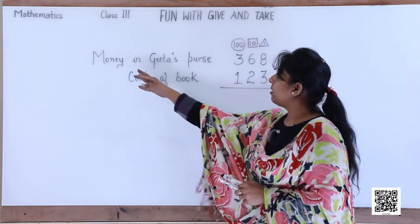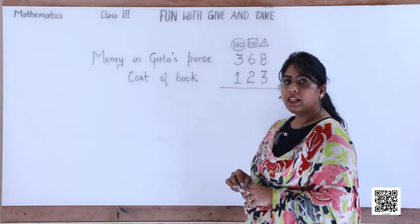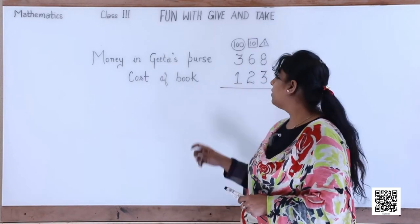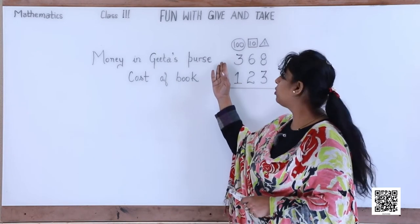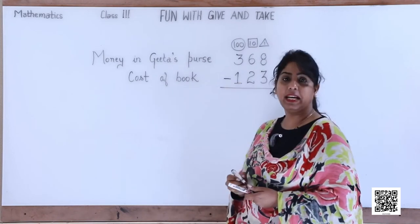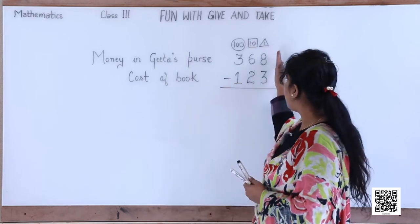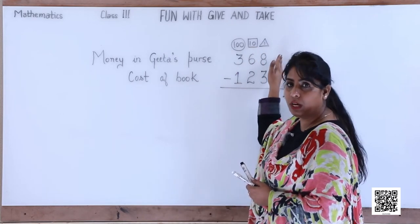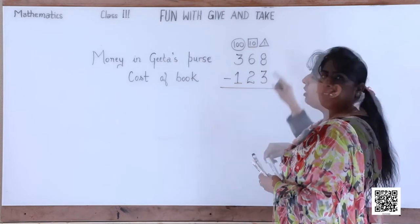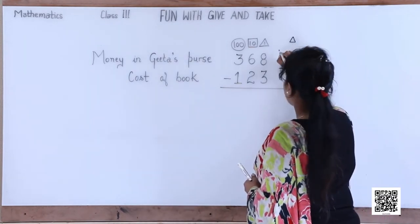You already know that money in Gita's purse was rupees 368 and the cost of the book was 123. To find how much money is left, we will subtract the amount she spent from the total. We put the minus sign and begin with ones. In the ones place, the digit is eight — so how many ones are there? Yes, eight. Let's draw eight ones here.